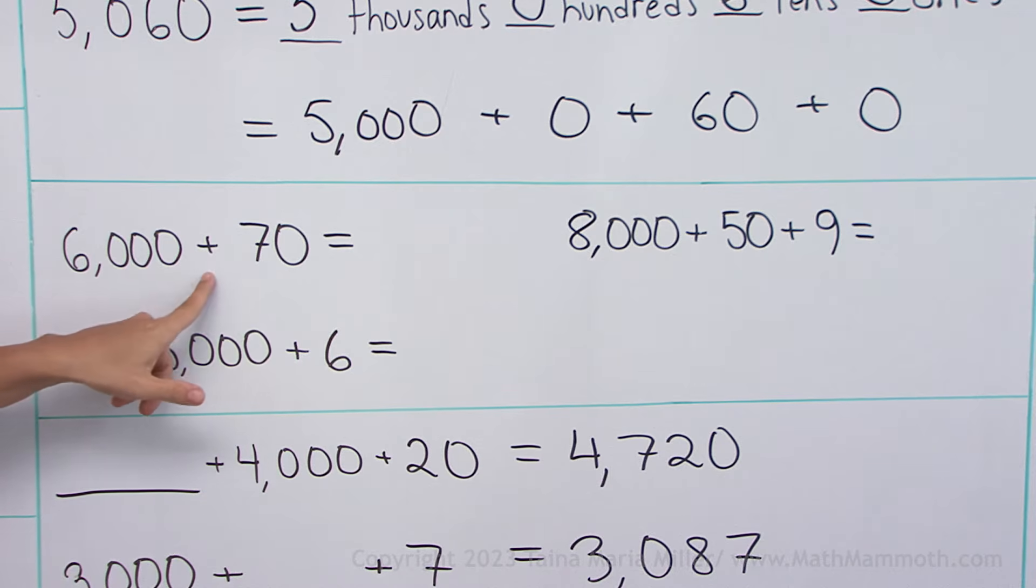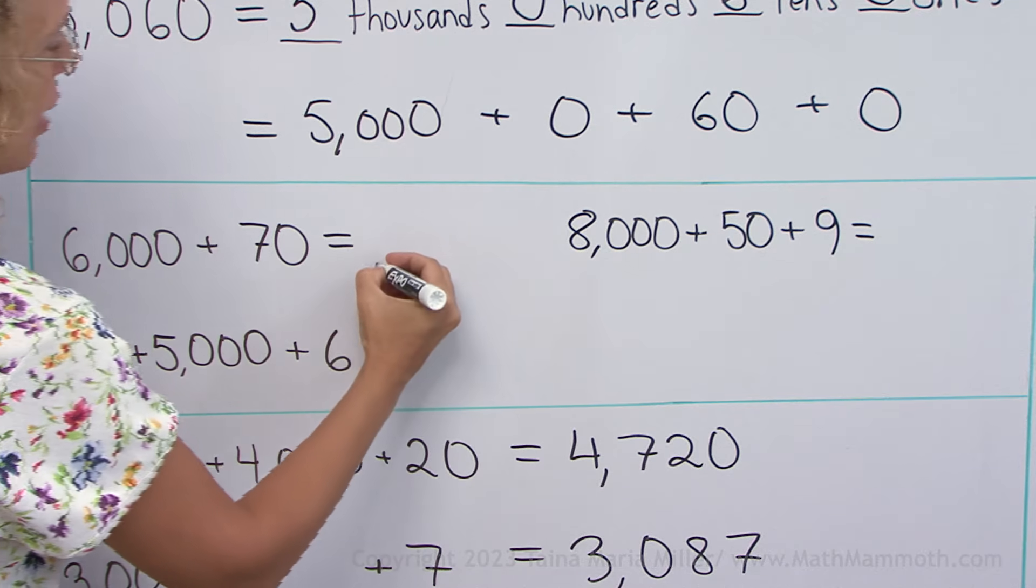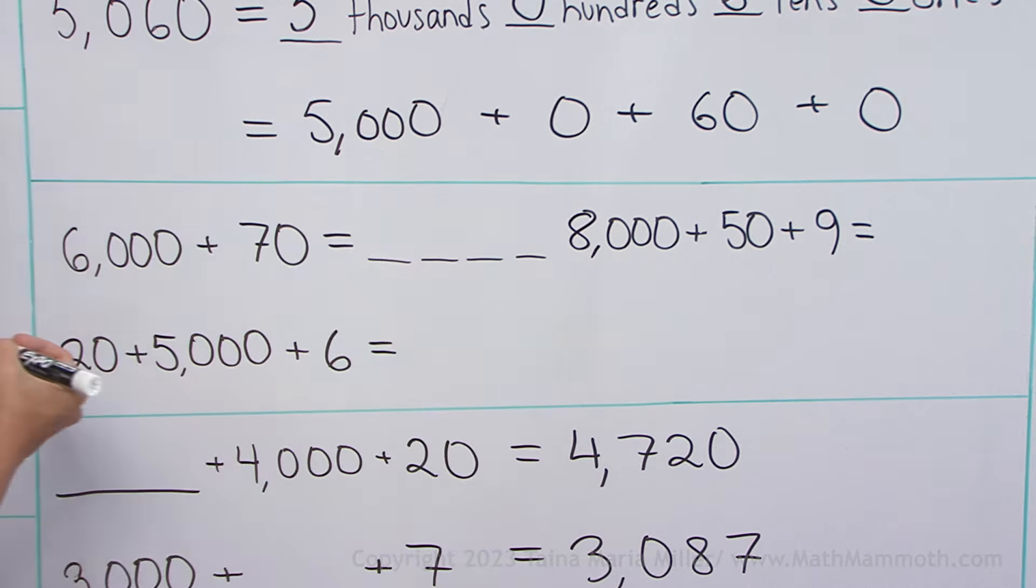Six thousand plus seventy makes six thousand seventy. But how do you write it? Keep in mind you will need four digits.